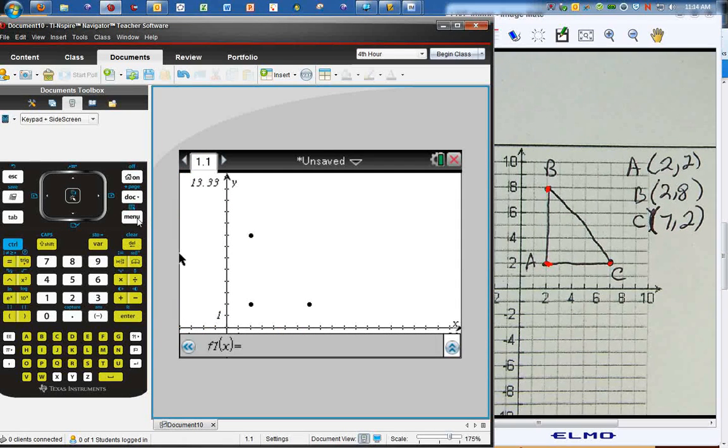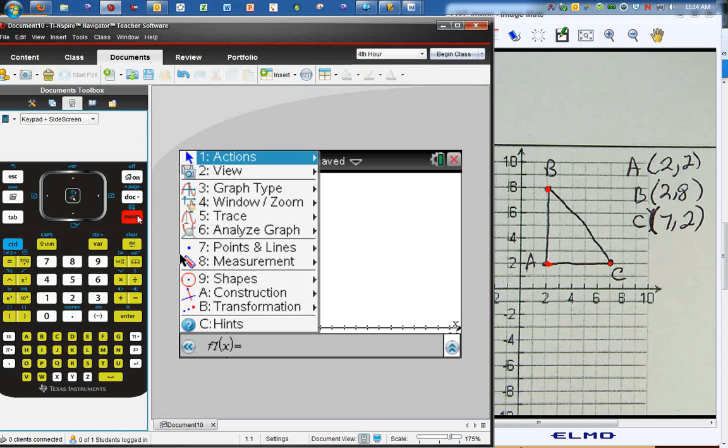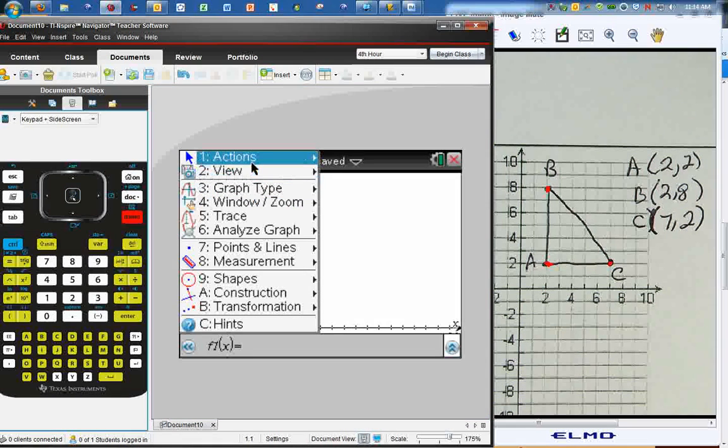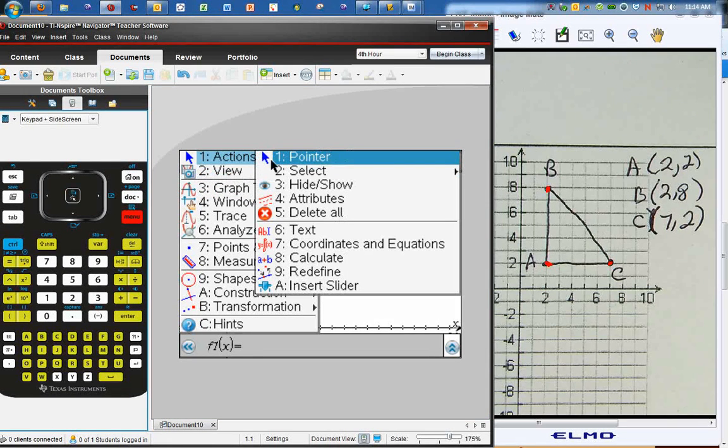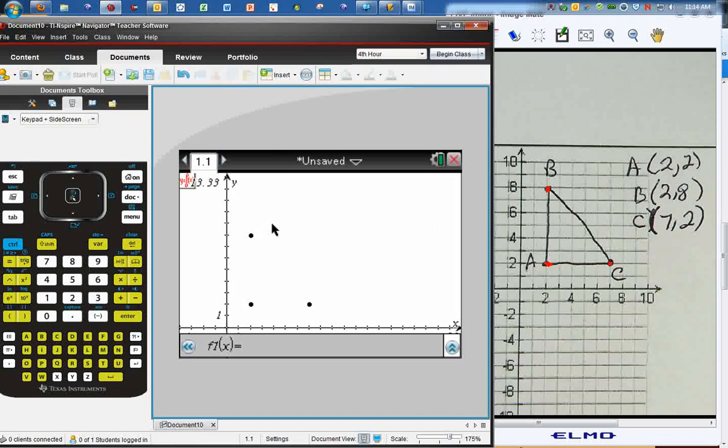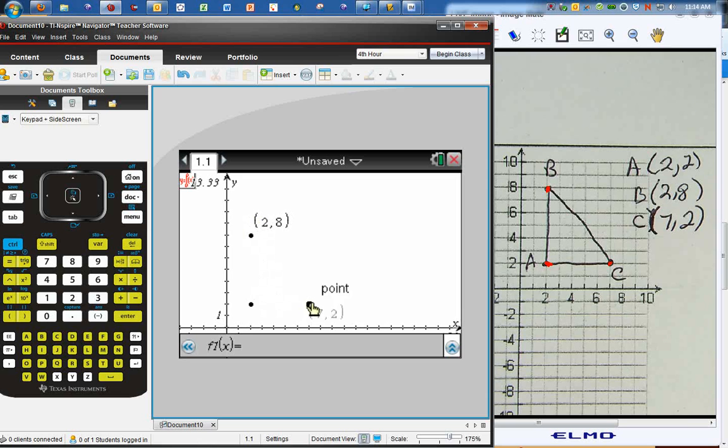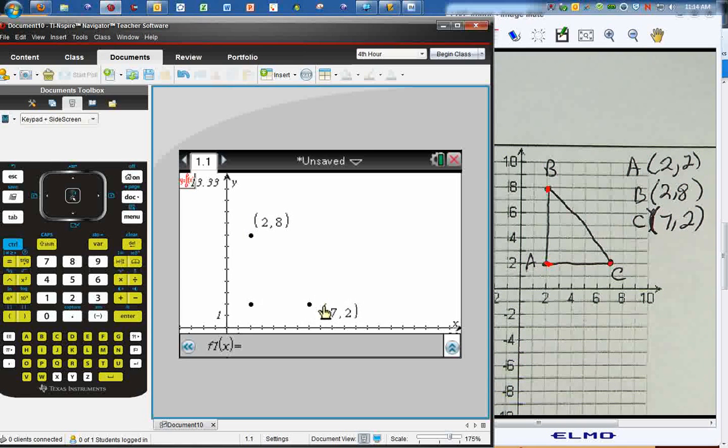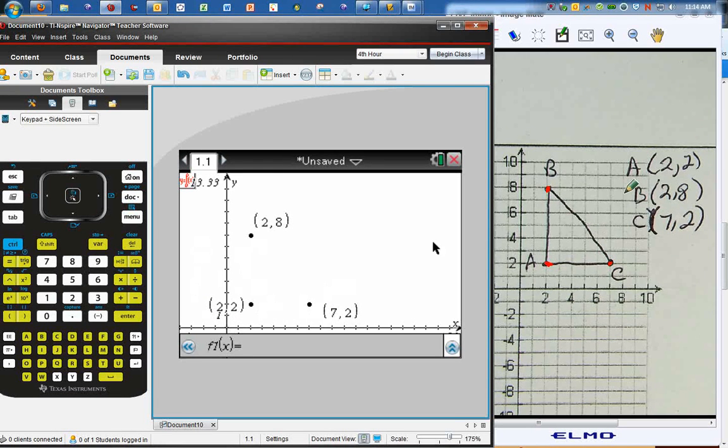Now, we can hit menu, and you can go to actions. And if you go down to actions and you hit coordinates and equations, you can actually plot the coordinates. There's 2, 8. There's 7, 2. Then there's 2, 2. I'll put that right over there. And so now we have our three points.